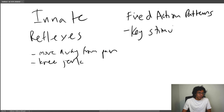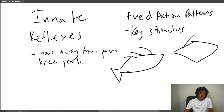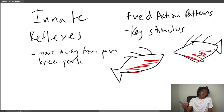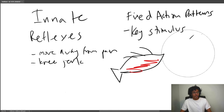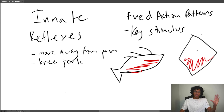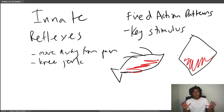A great example of fixed action patterns is sticklebacks. Male sticklebacks have red bellies, and every time a male stickleback sees another male, it becomes very aggressive. Scientists found that even if you show a male stickleback a completely shapeless blob with a red belly painted on it, it will attack it. But if you show it a lifelike model of a fish without the red belly, it does nothing. So fixed action patterns happen in response to a very specific stimulus, and the action is always the same — it's innate, not learned.